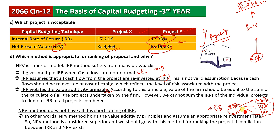This is how NPV is the superior model — it maximizes shareholder wealth. NPV remains superior even when there is a conflict between IRR and NPV rankings. If you have any confusion or questions, please leave a comment. Please consider subscribing and sharing. Thank you.